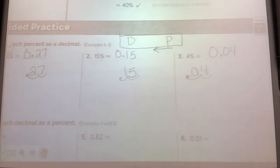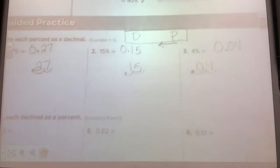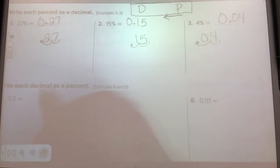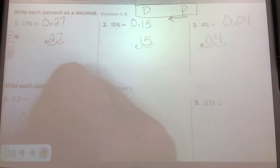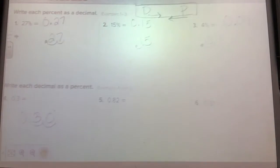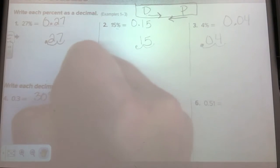Alright, now we're going to flip it and go to the right because we've got decimals. Write each decimal as a percent. Zero point three. I go to the right one, two. I got a decimal, I'm going to a percent, go to the right, always two places. Thirty percent.